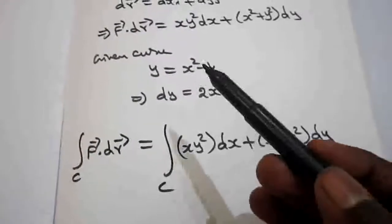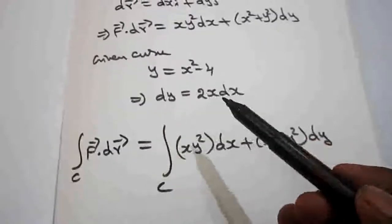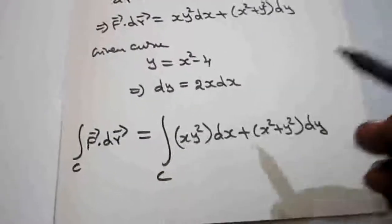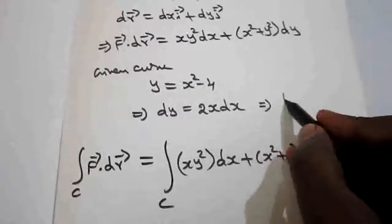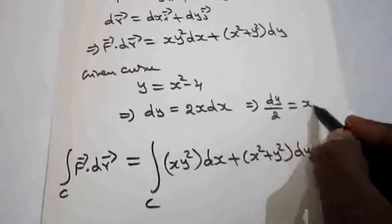So from this given curve I am going to put x value and dx value. Now you see, the function can be written as dy/2 = x dx.